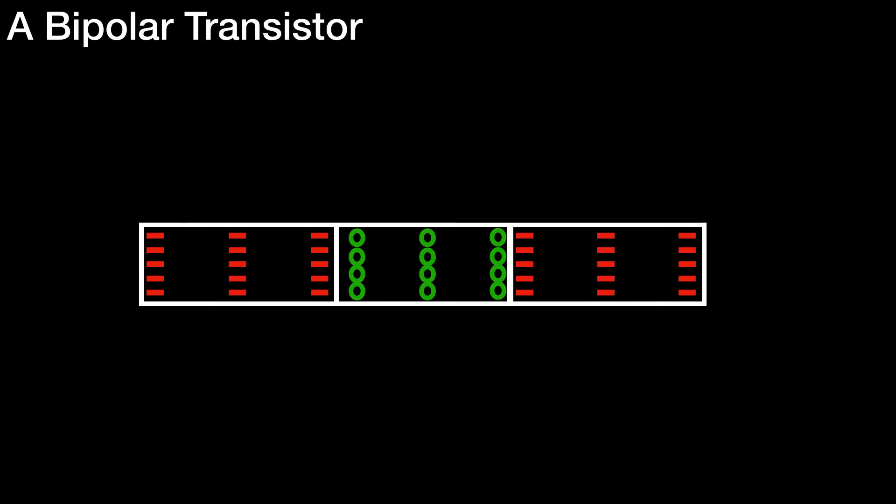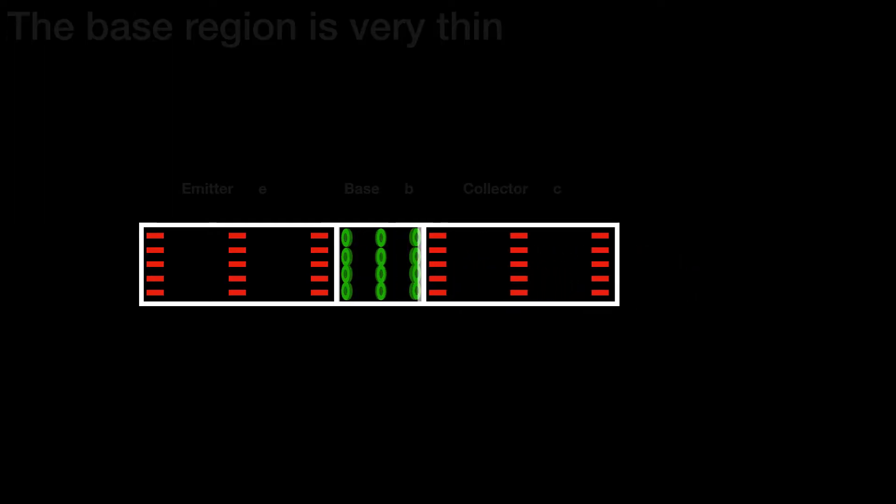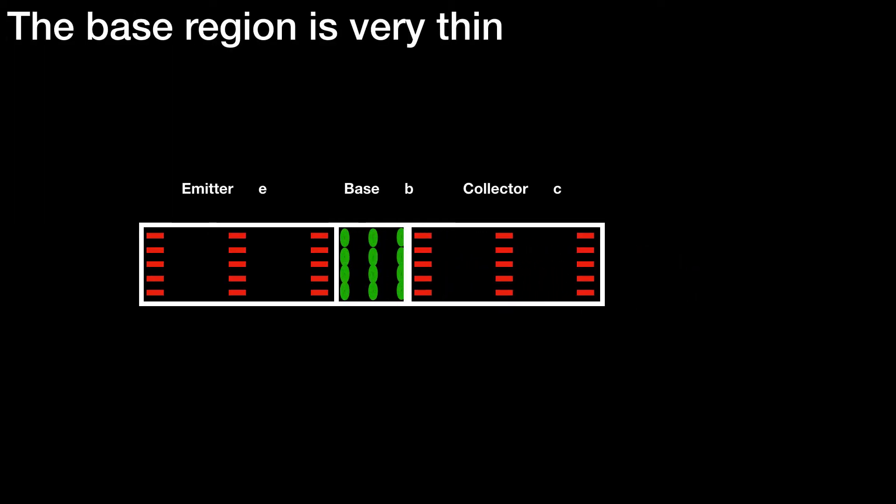With a bipolar transistor, the central bit or the base p-type substrate is very thin compared with the emitter and collector, the two pieces of n-type substrate on either side. On the screen there you can see the schematic symbol for an NPN transistor with the base, collector, and emitter as shown.